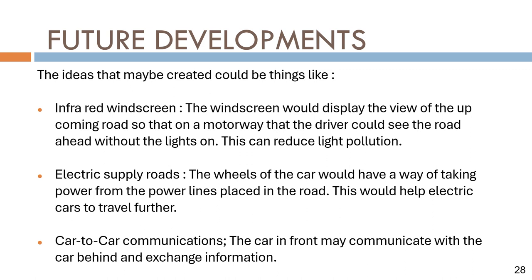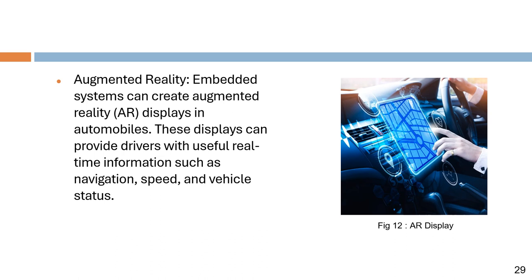Future developments may include: infrared windscreen, where the windscreen displays the view of the upcoming road so drivers can see ahead without lights, reducing light pollution. Electric supply roads, where wheels draw power from power lines embedded in the road, helping electric cars travel further. Car-to-car communication, where the car in front communicates with the car behind to exchange information. Augmented reality displays in automobiles, providing drivers with real-time information such as navigation, speed, and vehicle status.